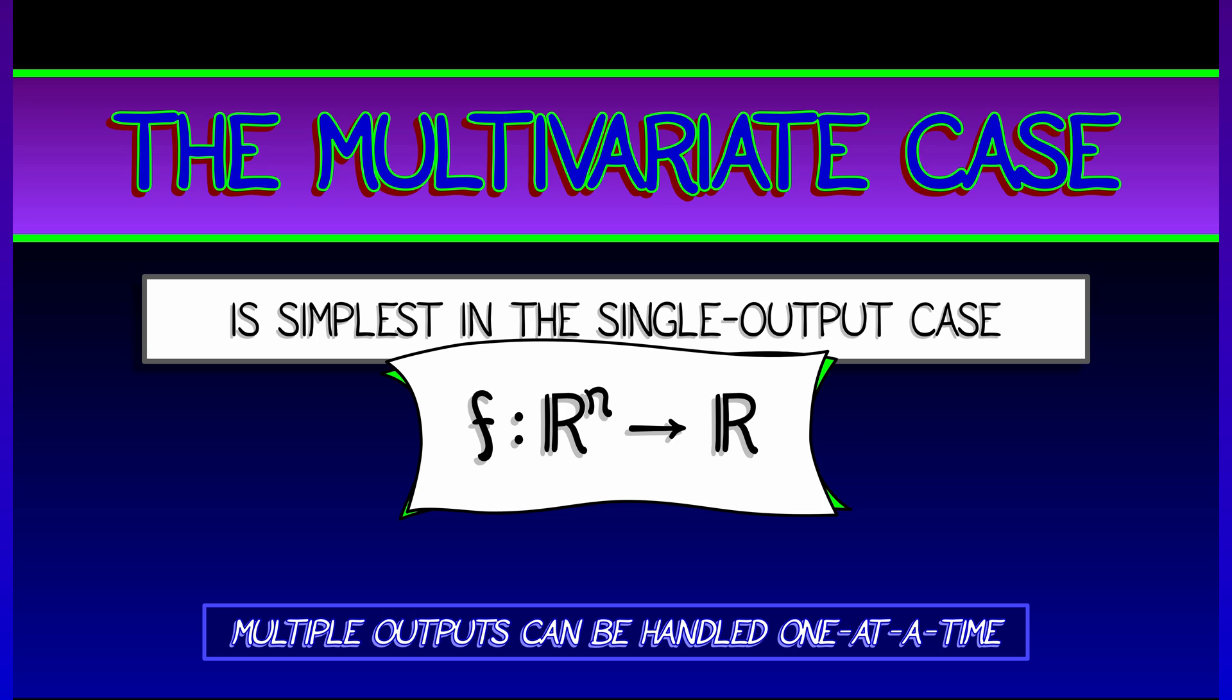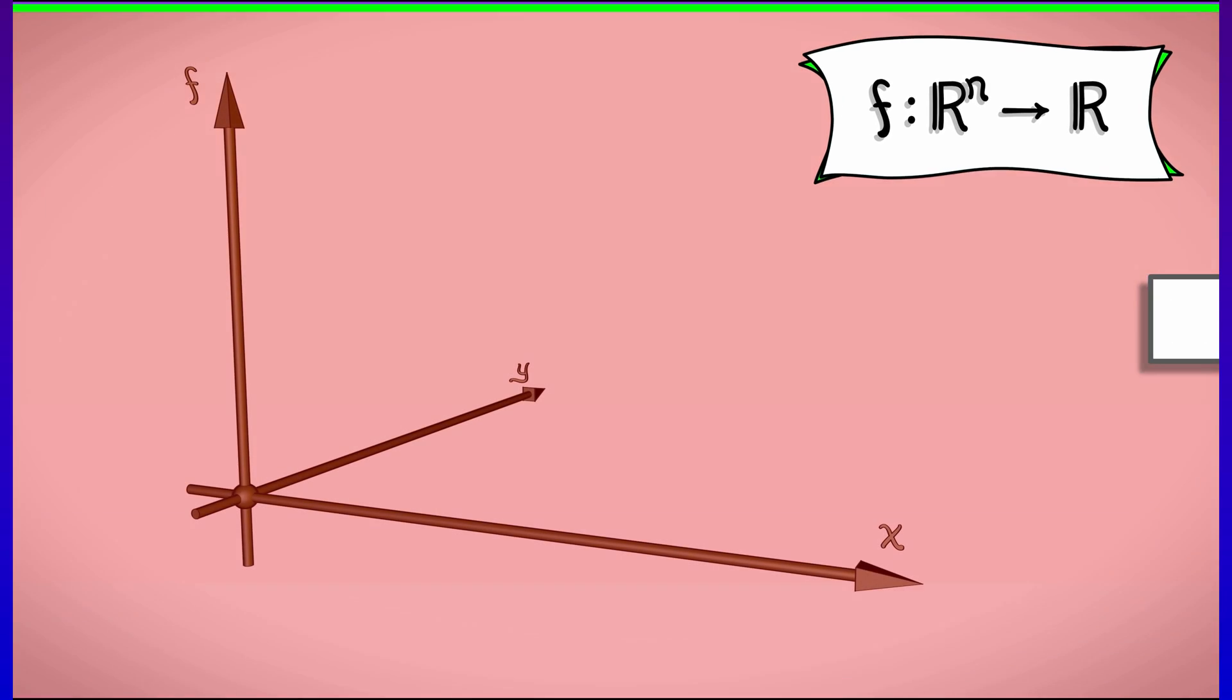If you have more outputs, deal with them one at a time. All right, what does a Taylor expansion really mean? What does it feel like?